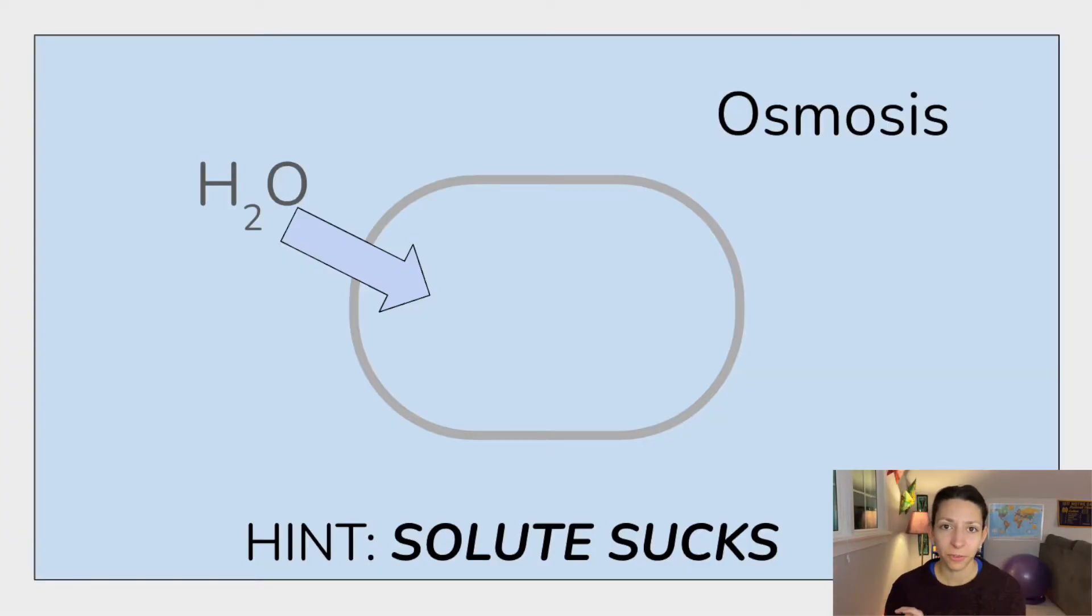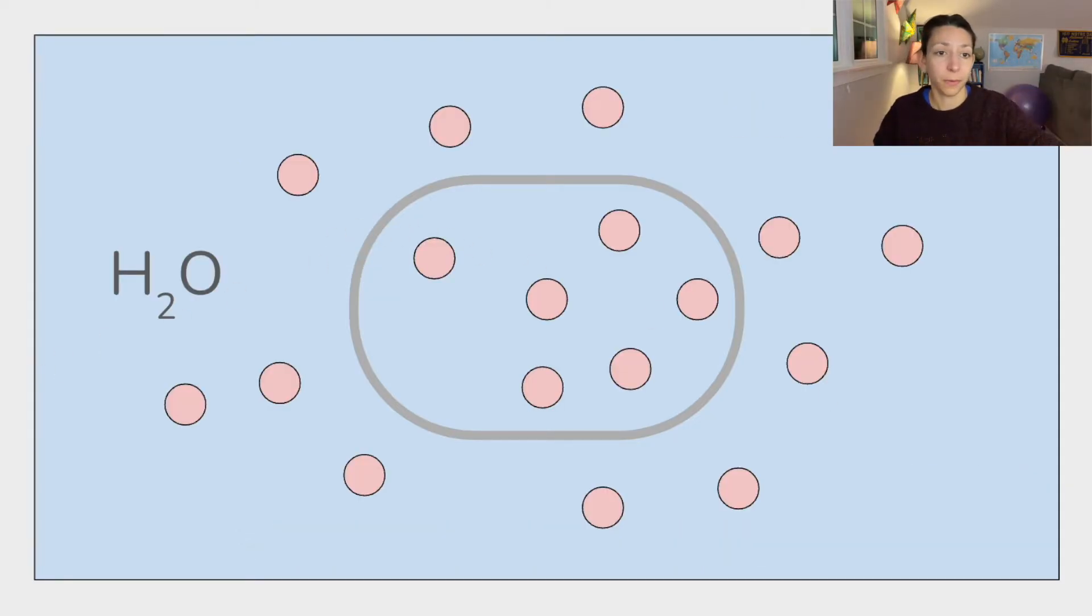All right. One last type of transport that I wanted to mention for today is osmosis. Now osmosis simply put is the diffusion of water. So it's when water moves across the membrane from a high concentration to a low concentration. And often occurs when there are differences in concentrations of solute, substances dissolved in solution that can't cross the membrane, but water can. And in general, water will move towards where there is more solute, even though the water itself is going from a high water concentration to a lower water concentration.